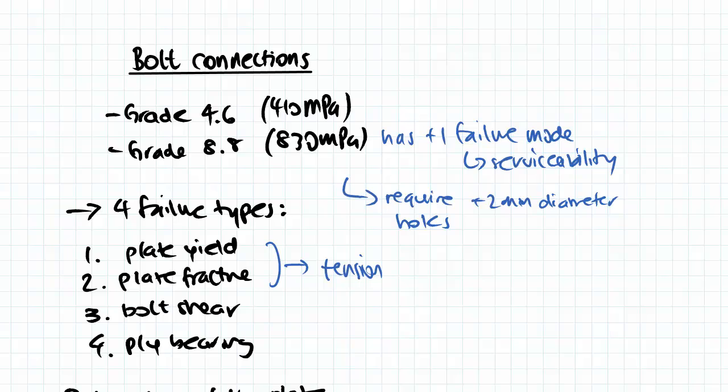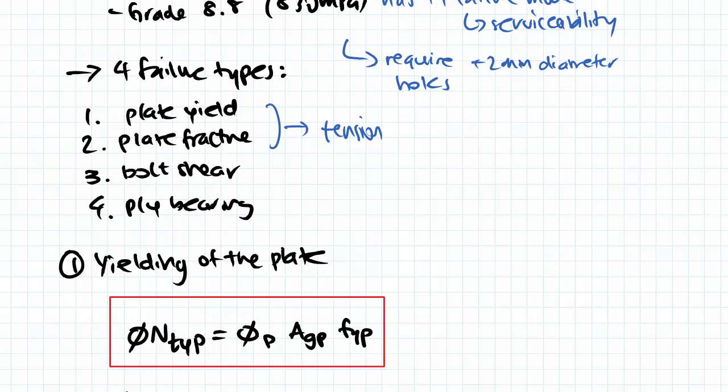So when we move on we're going to just look at the four failure types that are common between the two. And they are plate yield, plate fracture, bolt shear and ply bearing.